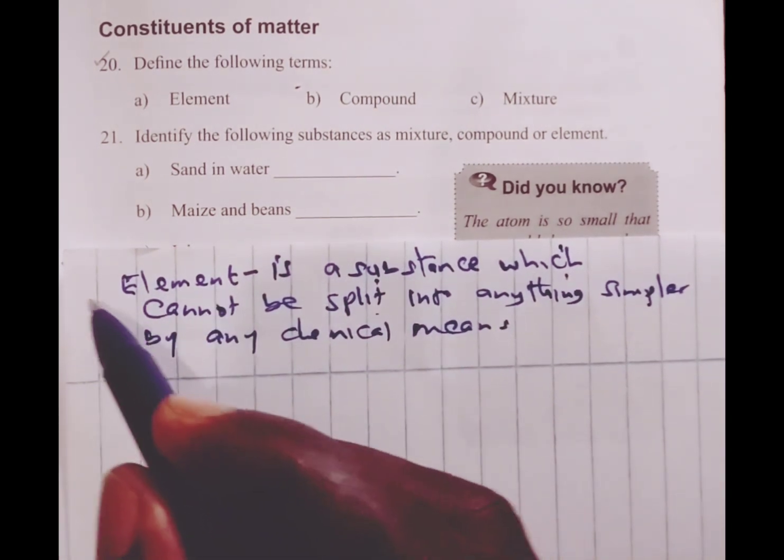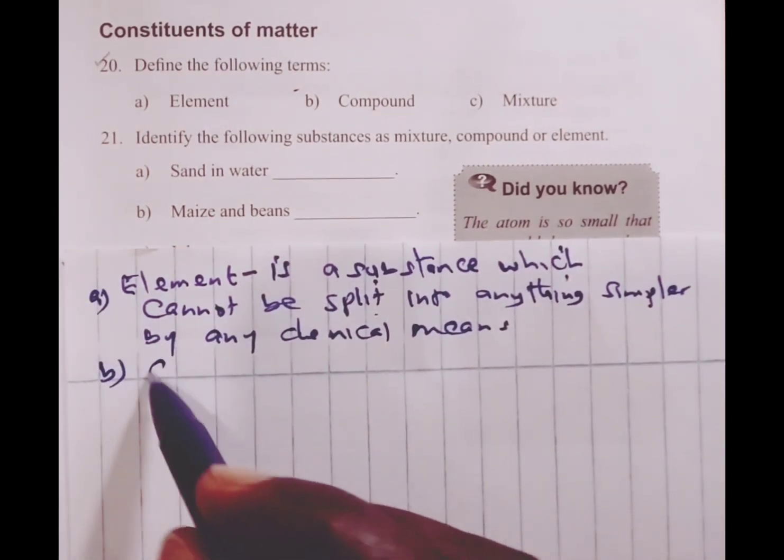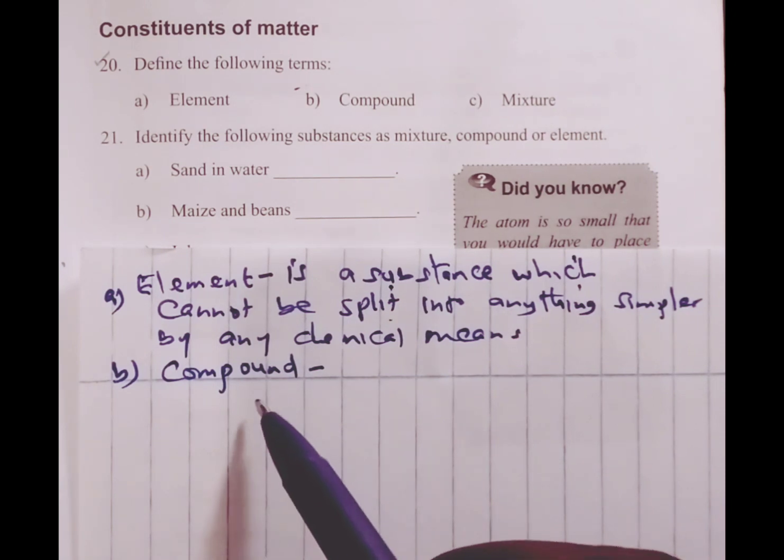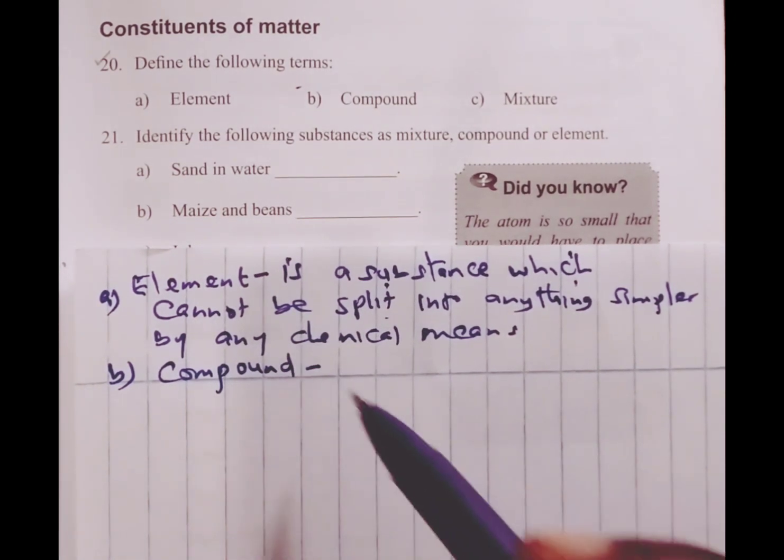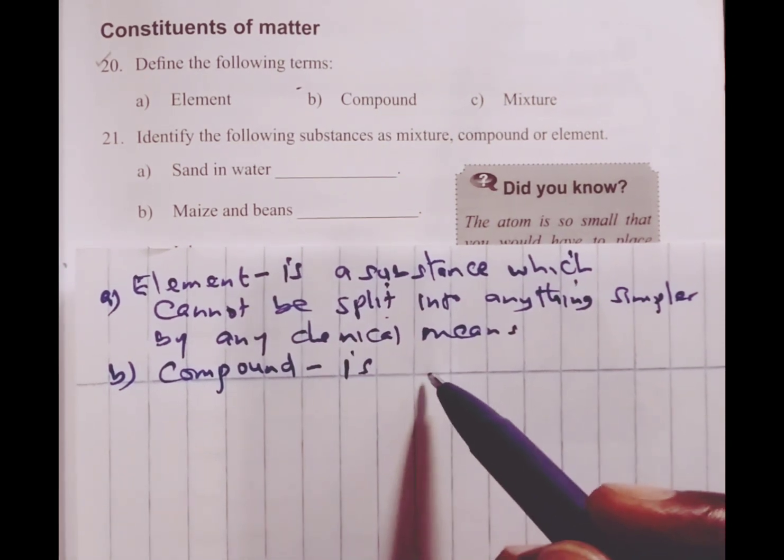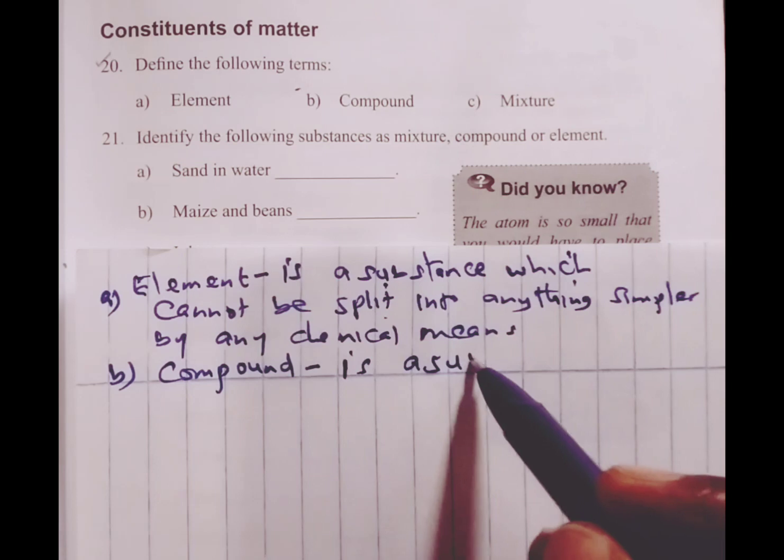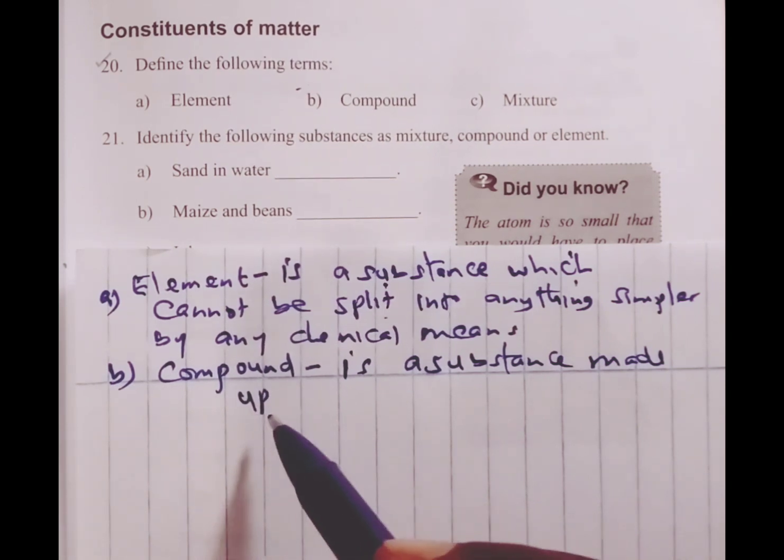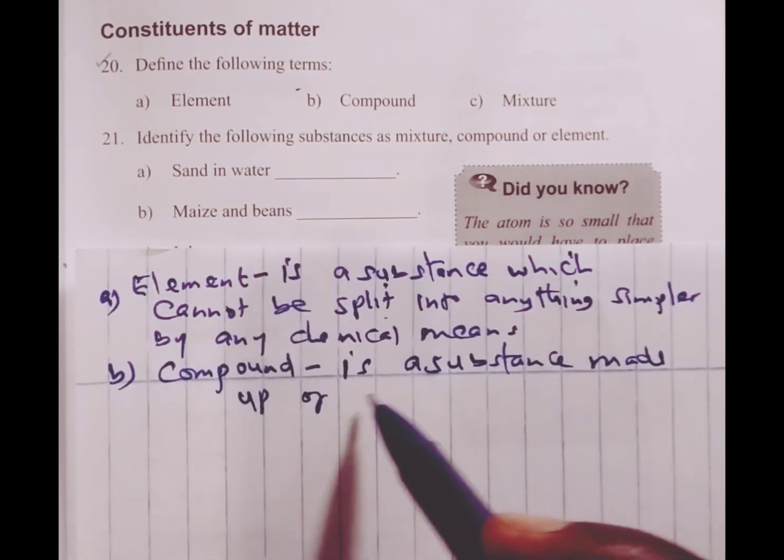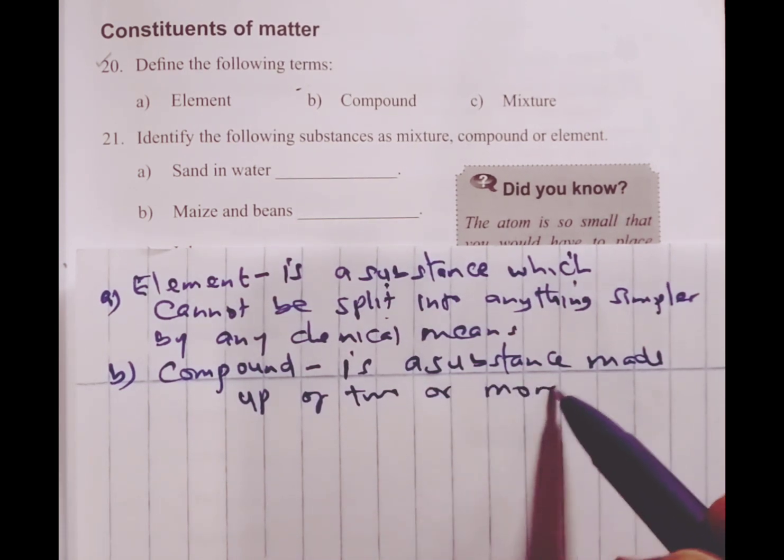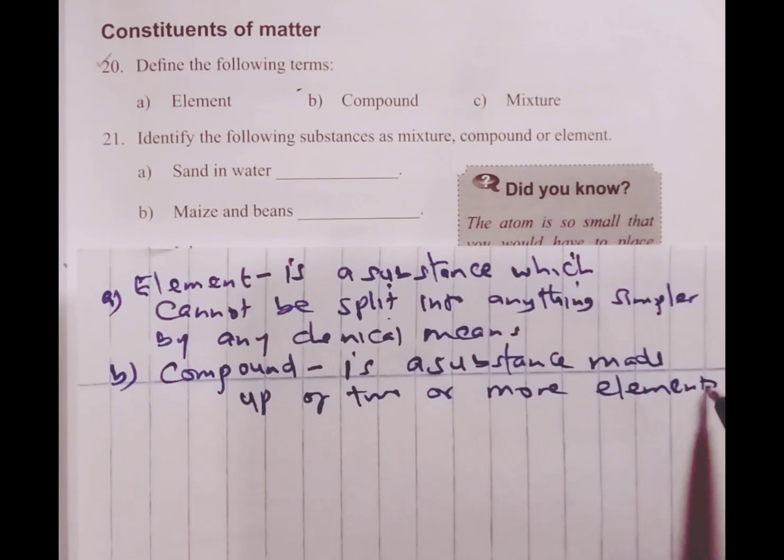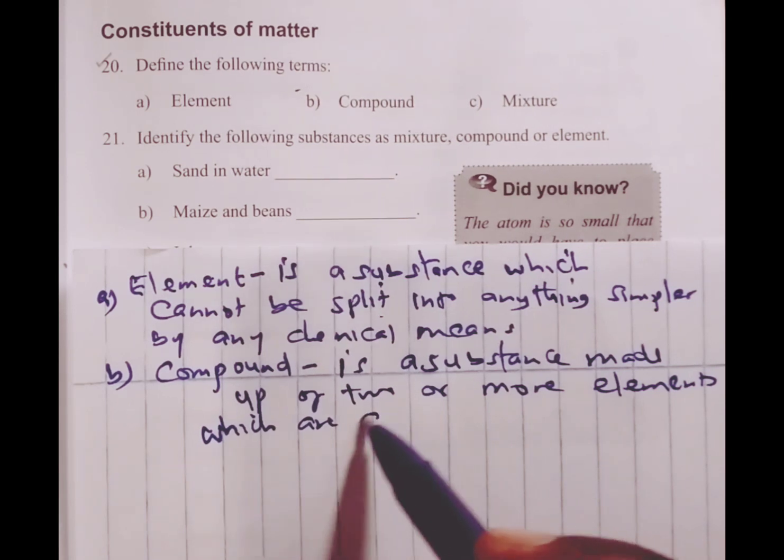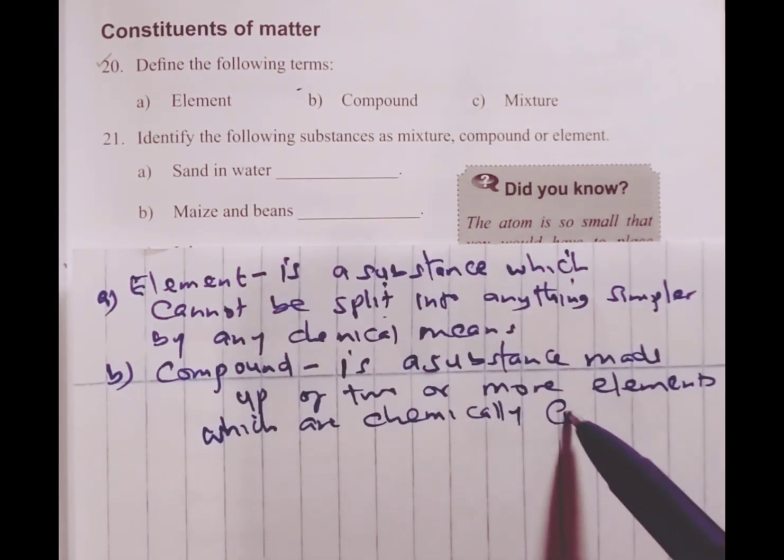So we have part B, which is a compound. Remember, an element and a compound are pure substances. So a compound is a substance made up of two or more elements which are chemically combined.